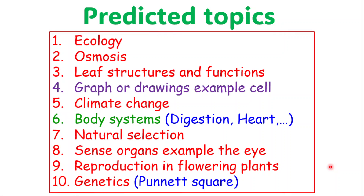So those are the complete topics, and for my 2024 prediction, based on the recent examinations, ecology is something you need to pay attention to. Osmosis, leaf structures and functions, and I'm predicting you might have a graph this time or some form of drawings — for example, the drawing of a cell. Pay attention to drawings and labellings of leaves or any organs, like even the heart, especially for question number two. Climate change you might see minimally — it may not be a lot, it may be a small amount. Not to say don't study it.